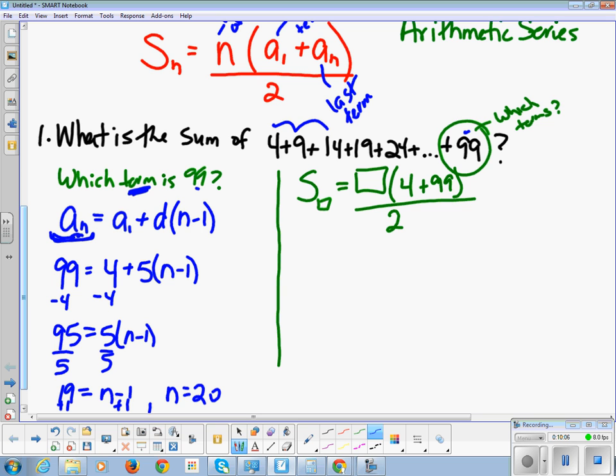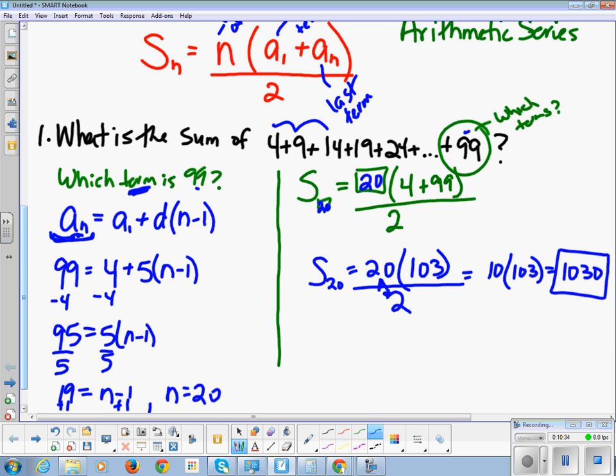So now I come up to here. The sum of the first 20 terms is 20 times 103 all divided by 2. And I'm going to do this first because I know 20 divided by 2 is 10. So the sum of the first 20 terms is 1030.